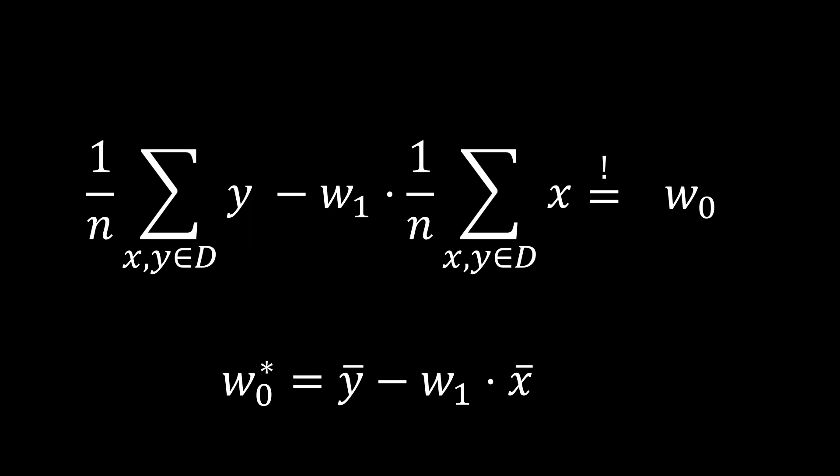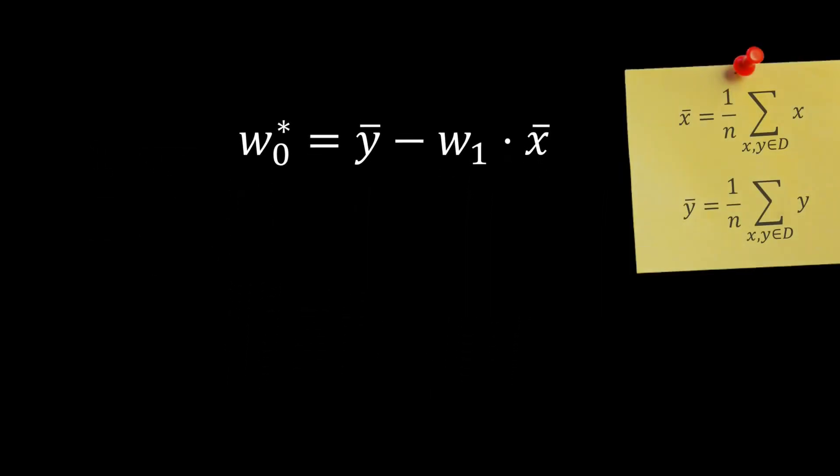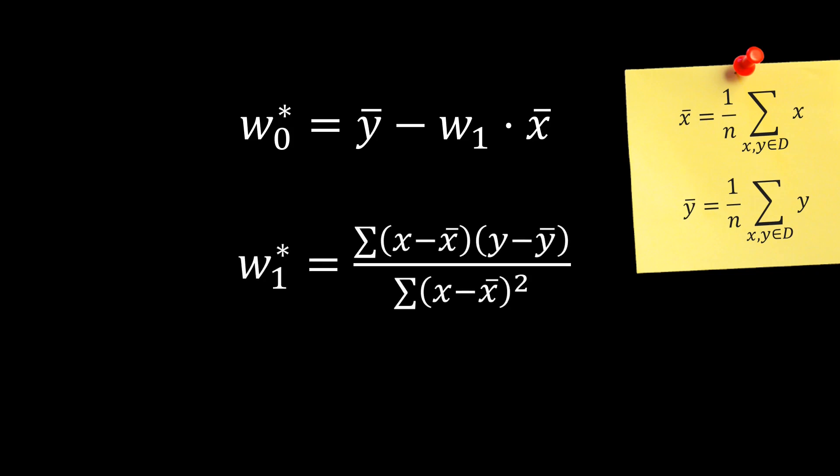Similarly, we can differentiate the loss with respect to W1, set it to zero and solve for W1 to find the optimal weight W1. This gives us an optimal set of weights for the simple case where a single input X needs to be mapped to an output Y. Note that these can be calculated simply by taking the averages over the data set. Given that we minimized the squared error term, this set of weights is also known as the ordinary least square estimate, or OLS in short.